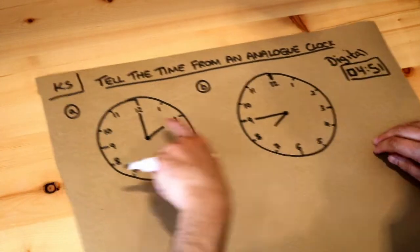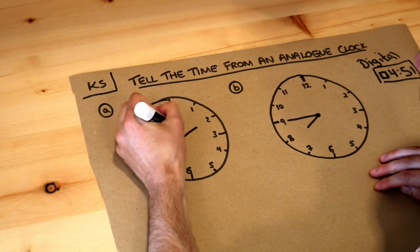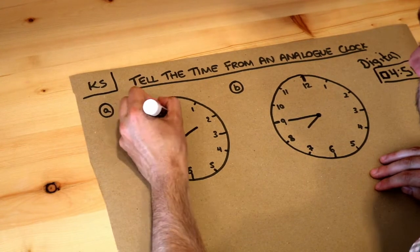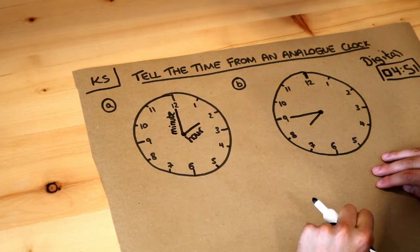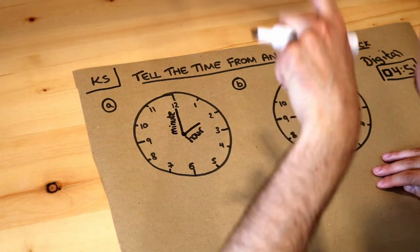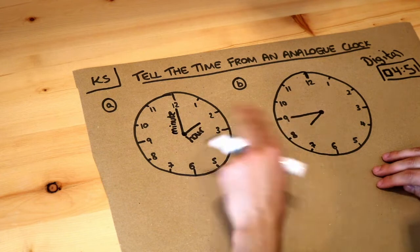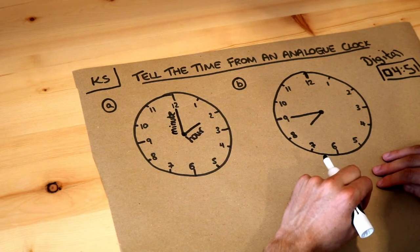Now we have two hands. This longer hand is known as the minute hand and the shorter hand is known as the hour hand. We might also have a third hand, a really long thin one, and that's the second hand. We're not going to worry about that in this video.